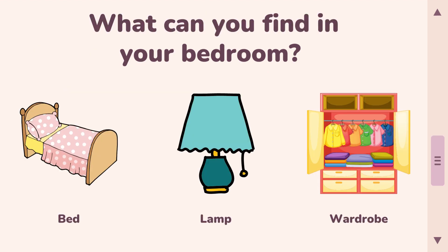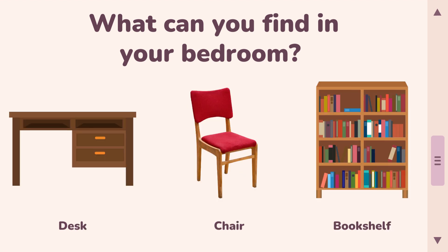So what can you find in your bedroom? Number one, your bed — of course, that's where you sleep. Number two, lamp — to make sure there's light in the evening. Number three, wardrobe — to keep all your clothes. Next, you have your desk and chair, for doing all your work if you work in the bedroom. And then the bookshelf to keep all your books, files, and everything you need for school.